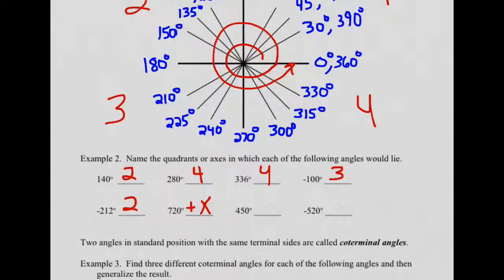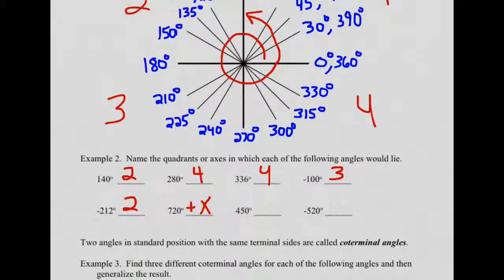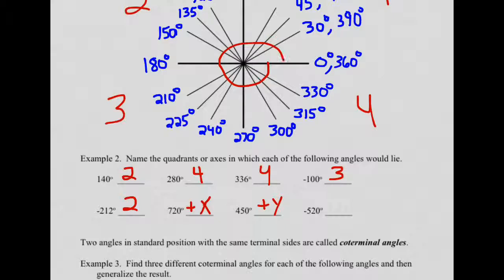450 degrees: here's 360, go another 90 and that gets you to 450, so that's along the positive y-axis. Negative 520: here's negative 180, negative 360, negative 450. If I keep going, there's negative 540, so negative 520 comes up just a little short of that — it's in the third quadrant.